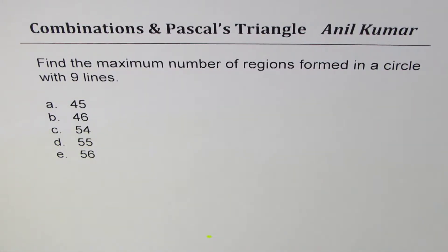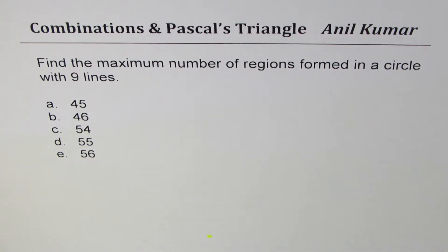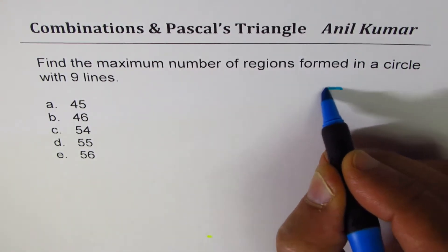Anil Kumar sharing with you a multiple choice question from a previous test paper. The question is: find the maximum number of regions formed in a circle with nine lines. You are given five choices: 45, 46, 54, 55, and 56. So we have a circle here.